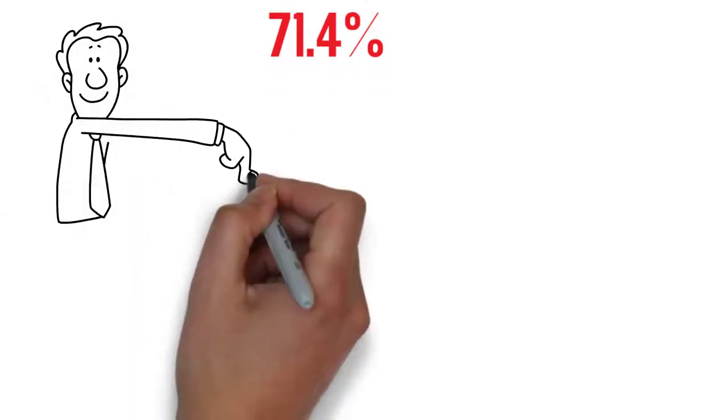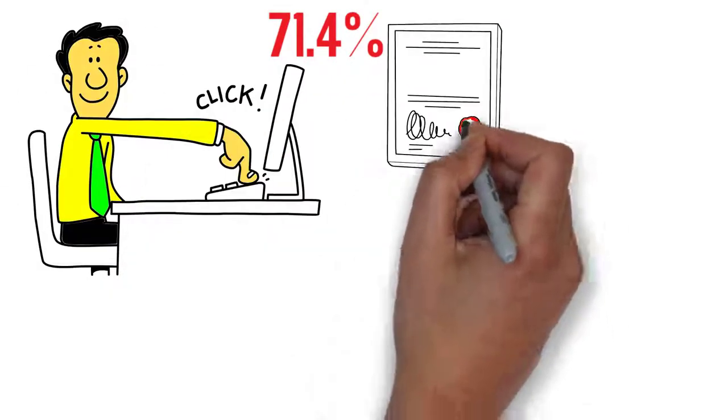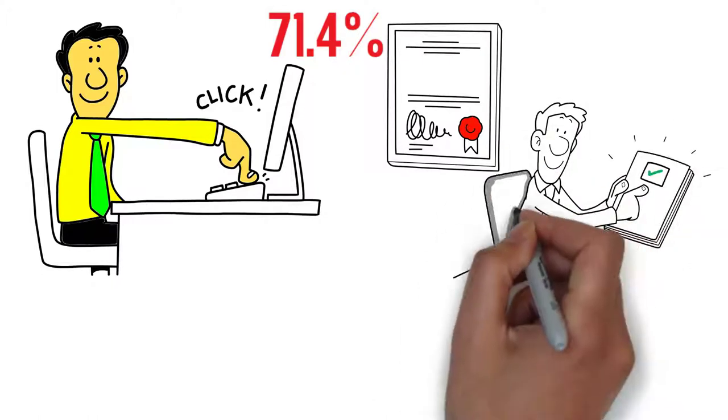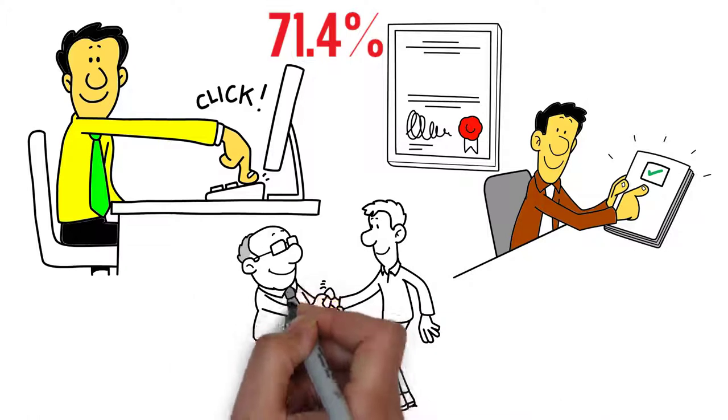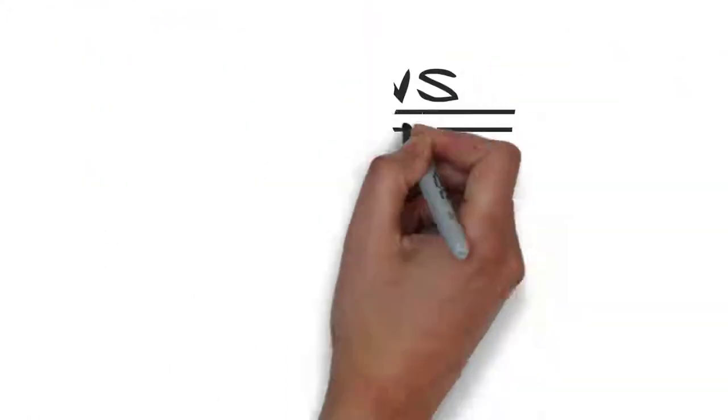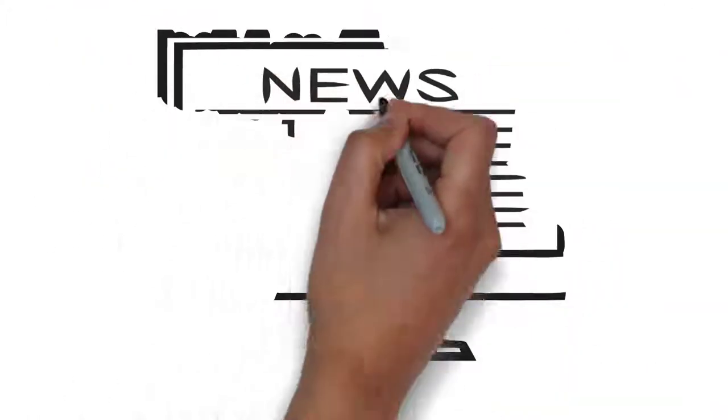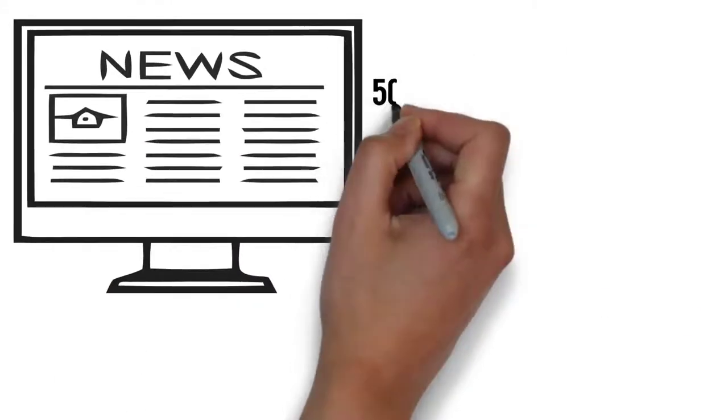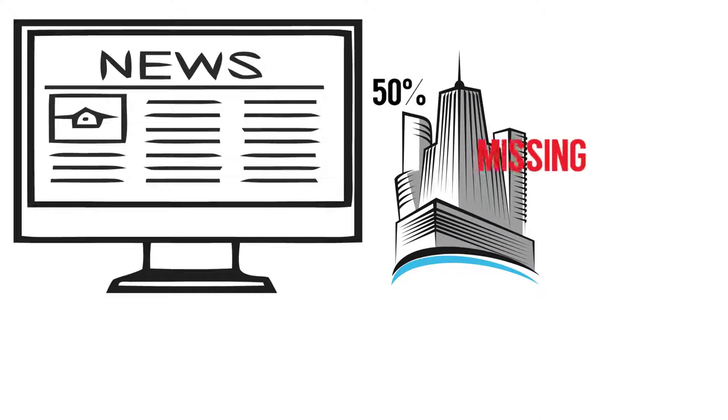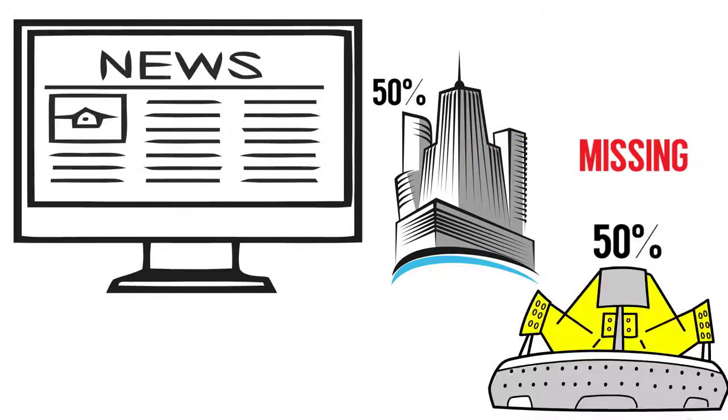71.4% of all analyzed organizations have published on their web pages their statute or other basic documents that regulate how the organization works as an indicator for transparency and open government. Contact information is available in 50% of the analyzed organizations and is missing from the web pages of another 50% of sport structures that have been analyzed.